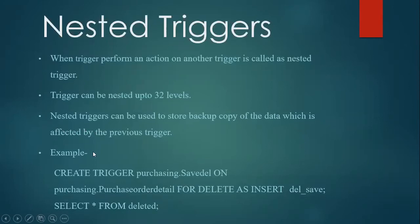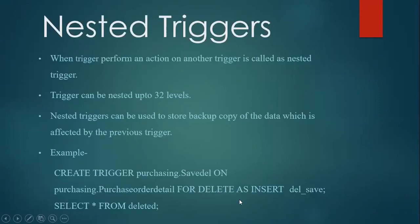Here is an example related to a nested trigger. In this example, we create a trigger called 'purchasing.savedel'. This is the trigger name. Then 'Nantar' refers to the second trigger name involved in the nesting.